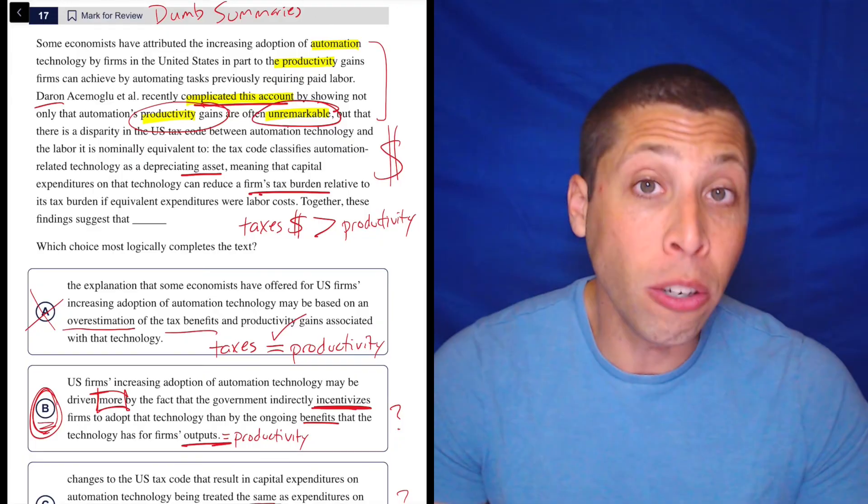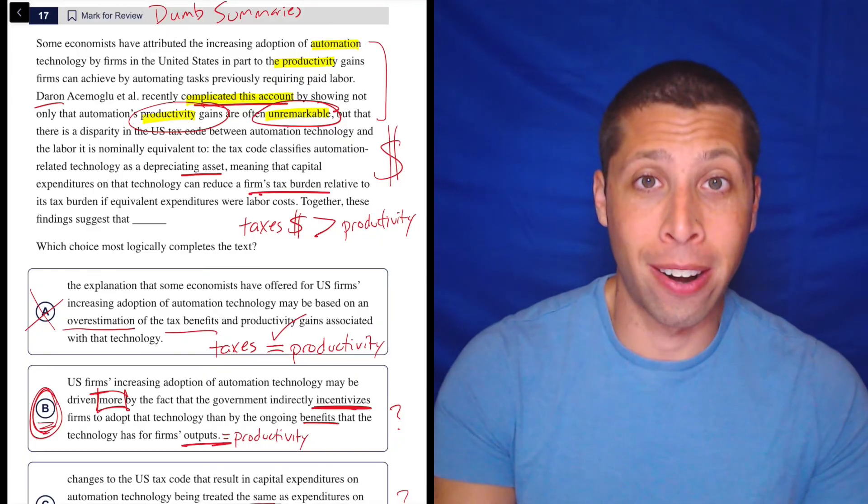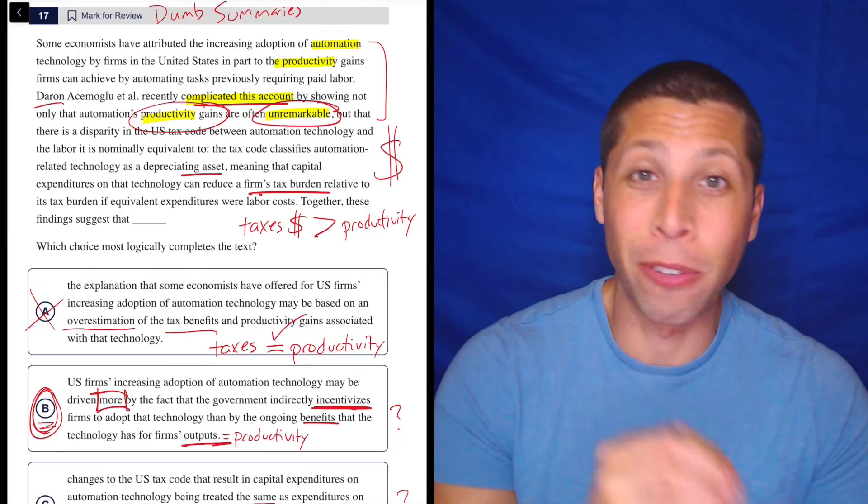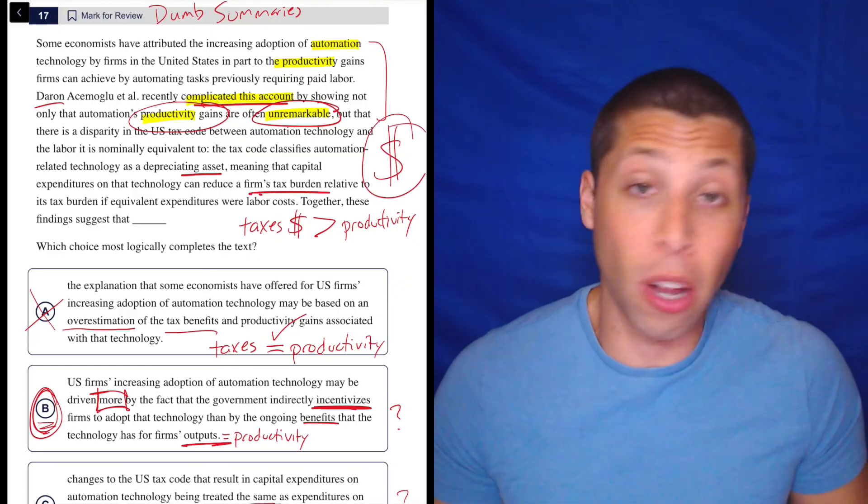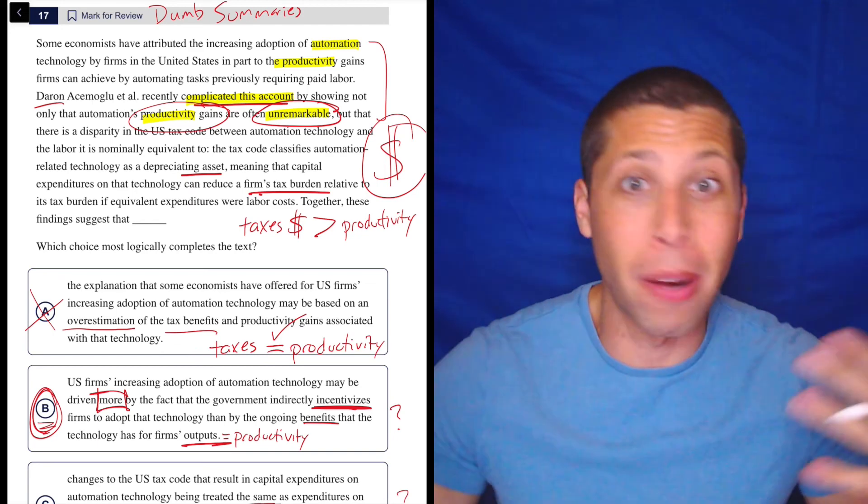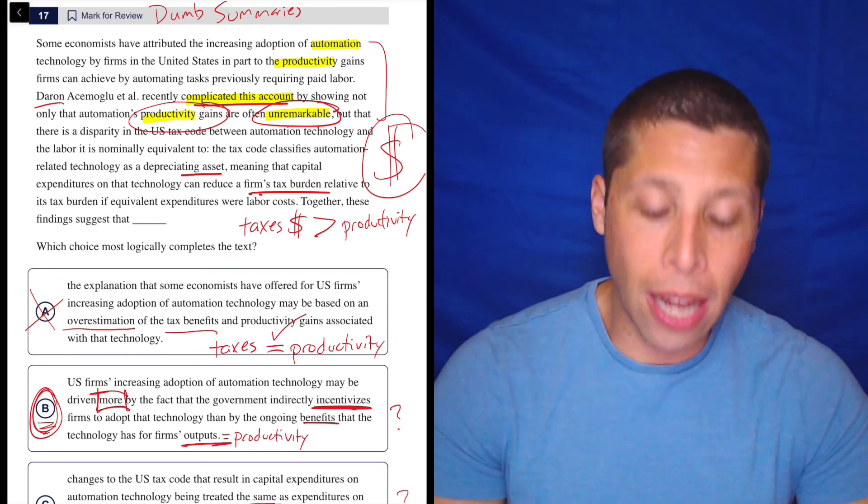So anytime I highlighted a noun there, I was highlighting a verb or an adjective to go with it. And so notice that this summary here is also more about just it's describing money in some way. So I hope that's helpful.